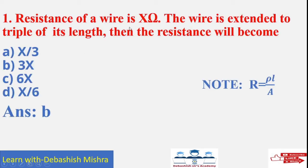Resistance of a wire is X ohm. Suppose it is X. Then the wire is extended to triple of its length. Then the resistance will become? You can see the note: R is equals to rho L by A. So R is directly proportional to its length. So it is extended to triple three times. So what will be your answer? 3X. So resistance will become 3X. So answer B is the correct answer.